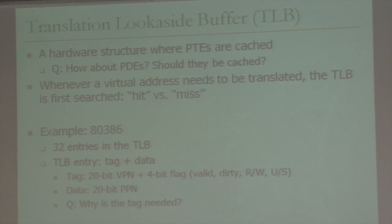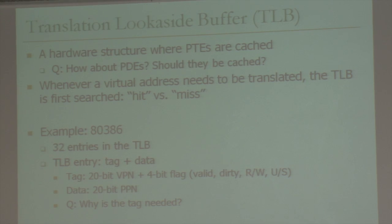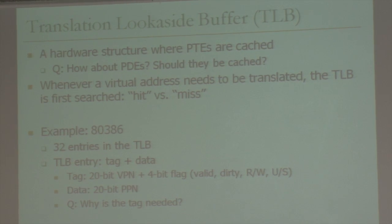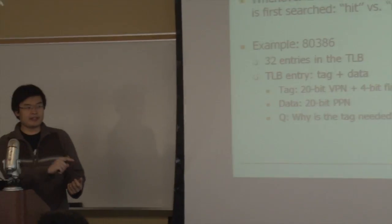Whenever a virtual address needs to be translated, the first thing we do is refer to this TLB table and search whether that particular virtual address exists in the TLB. If it is, you can get the actual page table entries from the TLB instead of walking the whole page table. For example, in the Intel 8386 there are 32 entries in the TLB. 32 is really small, but it's actually enough to store most of the frequently used page table entries and save a lot of memory bandwidth.